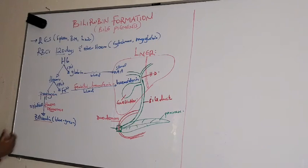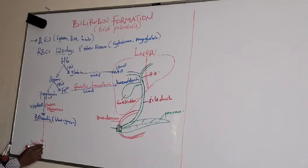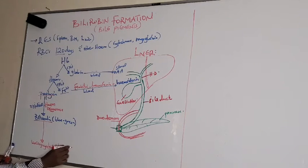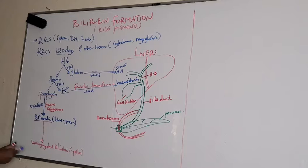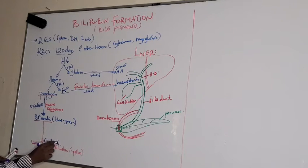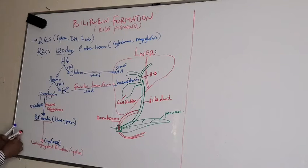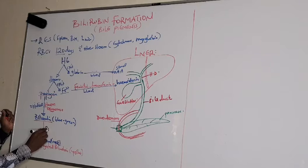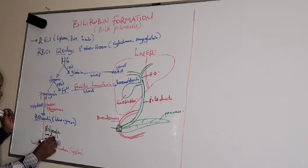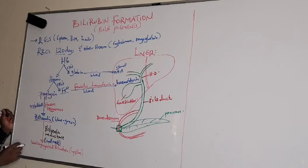This biliverdin that is formed is reduced to unconjugated bilirubin — also called indirect bilirubin — which is yellow in color. This reduction of blue-green biliverdin to yellow unconjugated (indirect) bilirubin is catalyzed by an enzyme known as biliverdin reductase.